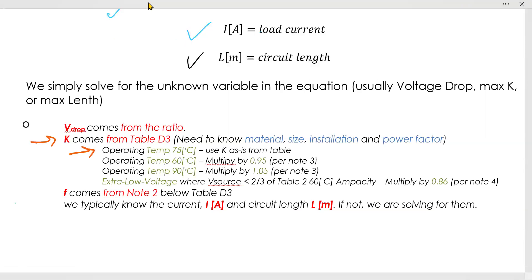Use it by itself if the temperature is 75 degrees. Multiply it by 0.95 if the temperature is 60 degrees. Multiply it by 1.05 if it's 90 degrees. If this is an extra low voltage case where the source voltage is less than two-thirds of the ampacity, then multiply it by 0.86. That's what note 3 and note 4 say.